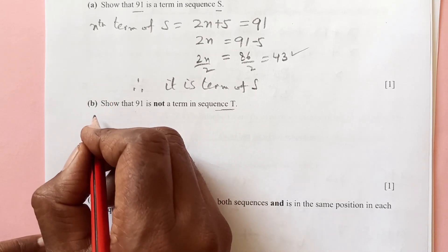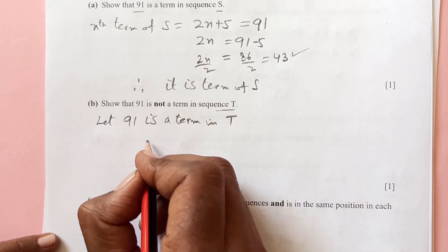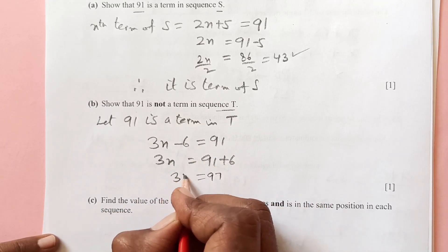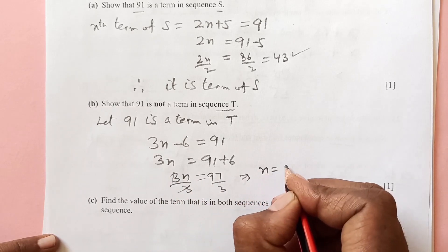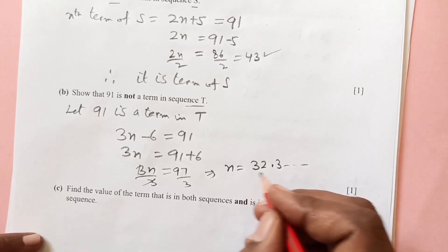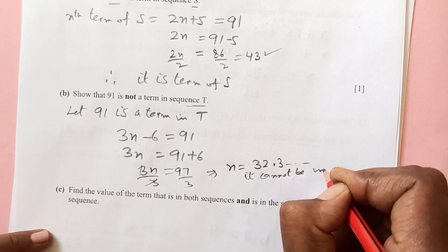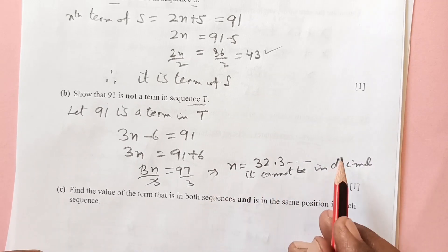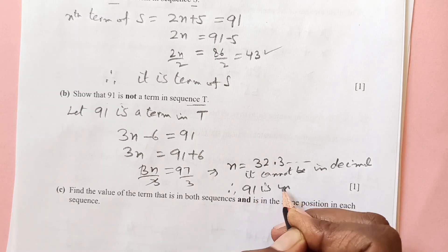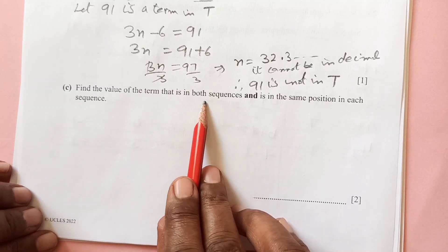Show that 91 is not a term of sequence T, where the nth term is 3n minus 6. If 91 is a term of T, then 3n minus 6 equals 91, so 3n equals 97, giving n equals 32.3. The number of a term cannot be a decimal — it must be a whole number like the 32nd or 33rd term. Therefore 91 is not in T.